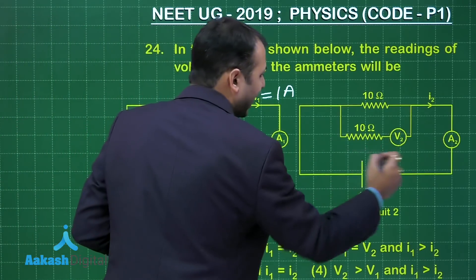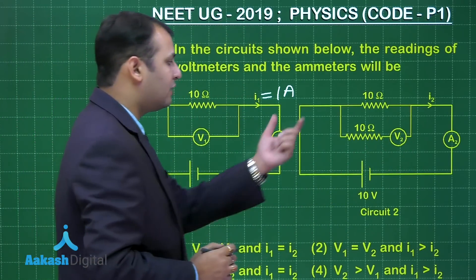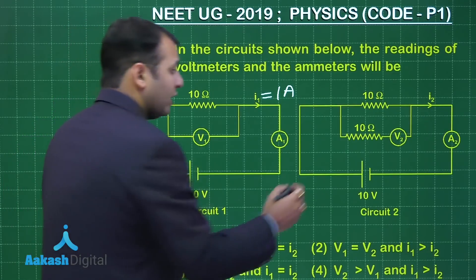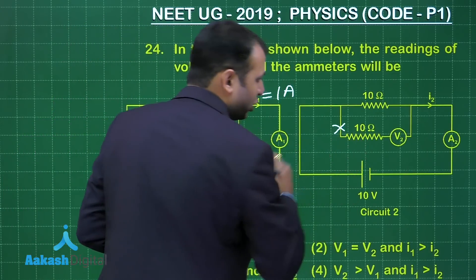Now when you come here, in this ideal situation, you are well aware that for voltmeter, the resistance should be infinite. And that means here, there will not be any current.